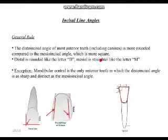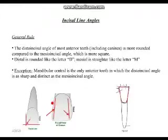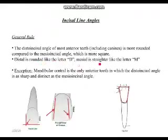To remember this general rule, connect it to the cingulum: since the cingulum is off-center to the distal, the distal incisal angle is more rounded. In the picture, the mesial line angle is square while the distal is more rounded with a little bulk. A memory tip: distal is rounded like the letter D; mesial is straight like the letter M.